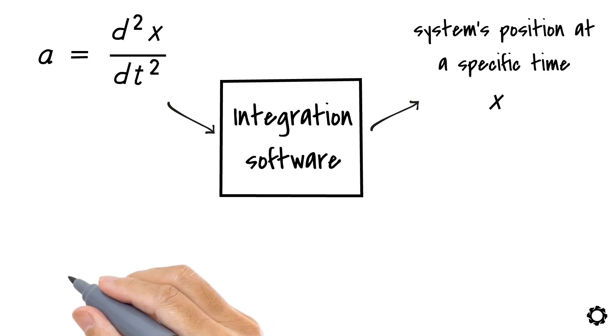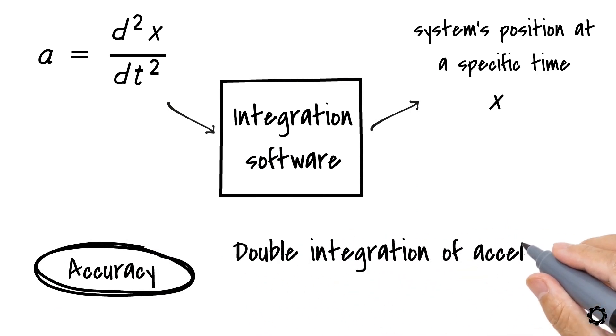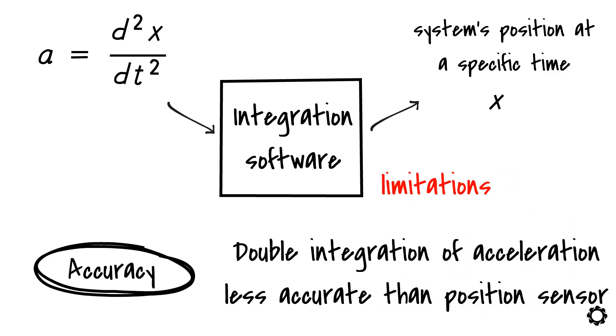There is one aspect, however, that we need to keep in mind. Since the system's position response is derived by using double integration of the acceleration, we will not have as accurate a response curve as we would if we used a position sensor. This is because of the limitations that are mostly related to the numerical algorithms that are used to obtain the position data from the measured acceleration.